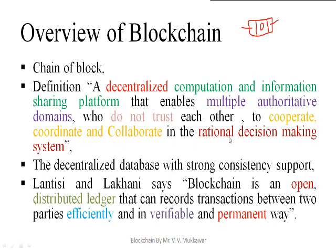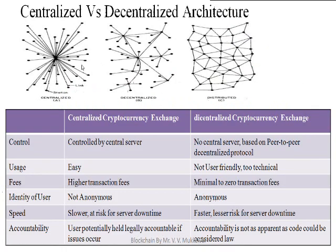If we consider a decentralized network, there is no central authority performing all the transactions. In a centralized network, the central authority is responsible for making all decisions, whereas in a decentralized network, no centralized authority is doing all the transactions.